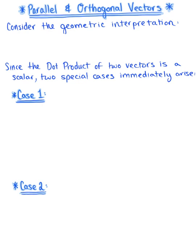Here we are looking at the dot product and its relation to parallel and orthogonal vectors — how we can use the dot product to determine if vectors are parallel or orthogonal. To get us started, let's consider the geometric interpretation of the dot product. We know that vector u dot vector v is equivalent to the magnitude of vector u multiplied by the magnitude of vector v multiplied by cosine of theta, where theta is between 0 and pi. Since the dot product of two vectors is a scalar, two special cases immediately arise: parallel and orthogonal (perpendicular) vectors.